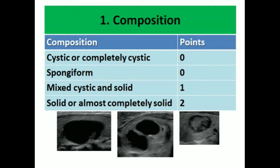First, we will discuss composition. If the composition of a nodule is cystic or completely cystic, the points awarded is zero. If the nodule is spongiform, it will also have zero points. If a nodule is complex, or a mixture of cystic and solid components, the points awarded will be one. If the nodule is solid or almost completely solid, the points awarded will be two.